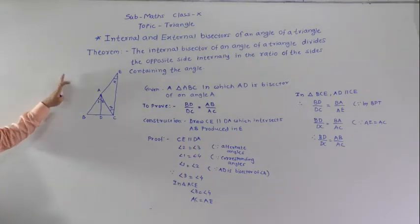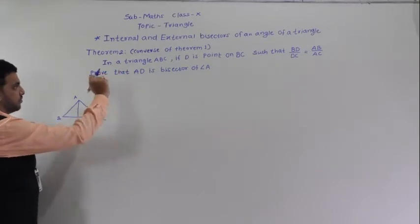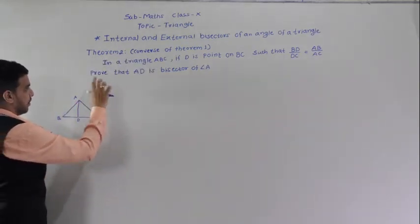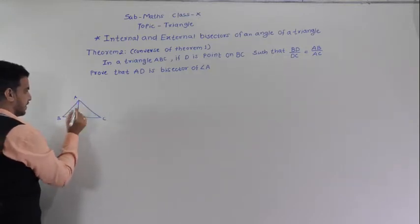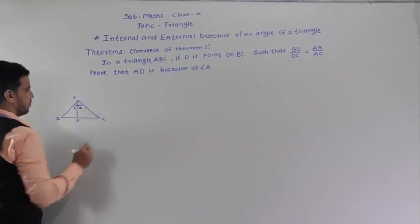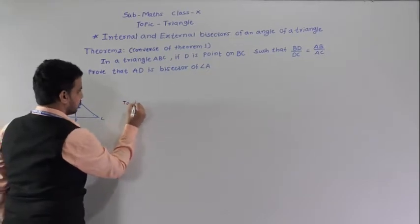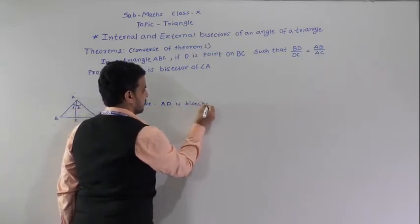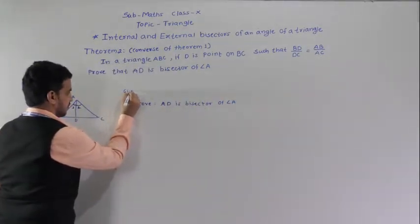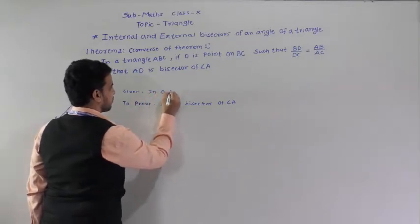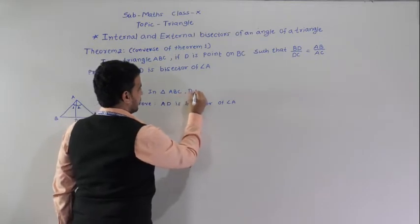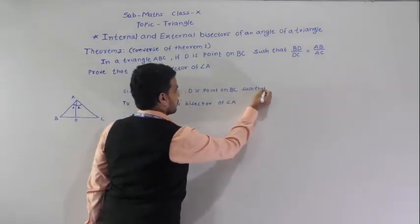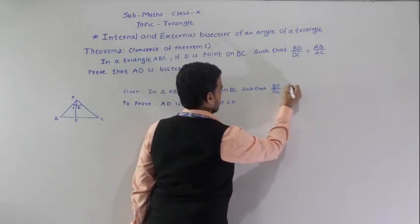Now we will see the converse of this theorem. This is the converse of theorem one: in a triangle ABC, if D is a point on BC such that BD by DC is equal to AB by AC, we have to prove that AD is a bisector of angle A, meaning angle 1 equals angle 2.